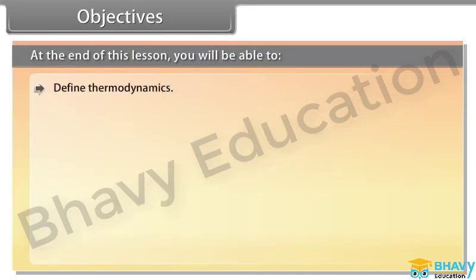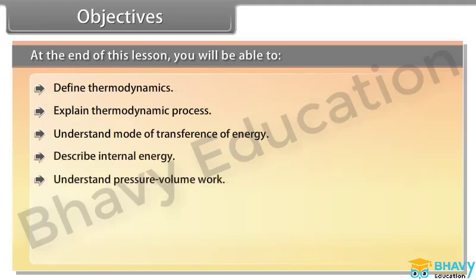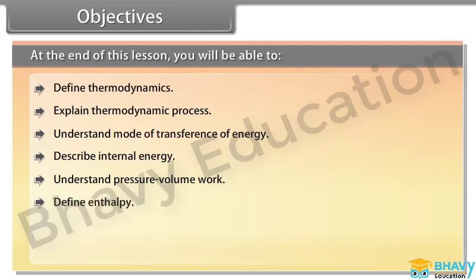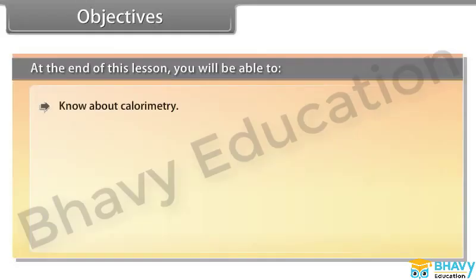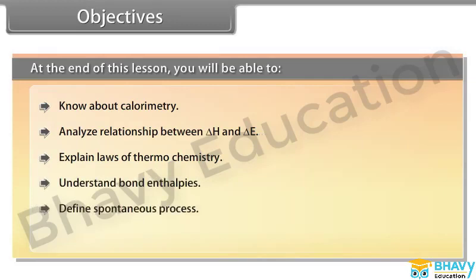At the end of this lesson, you will be able to: define thermodynamics, explain thermodynamic process, understand mode of transference of energy, describe internal energy, understand pressure-volume work, define enthalpy, differentiate extensive and intensive properties, calculate heat capacity, know about calorimetry, analyze relationship between delta H and delta E, explain laws of thermochemistry, understand bond enthalpies, define spontaneous process, and calculate Gibbs energy.